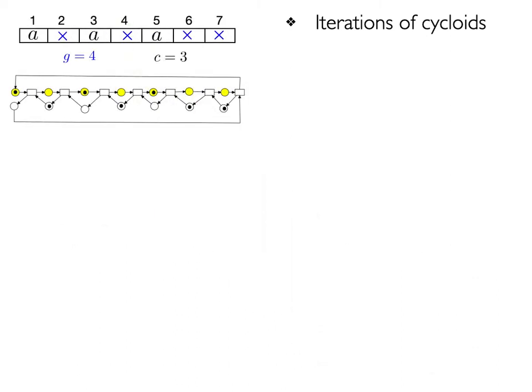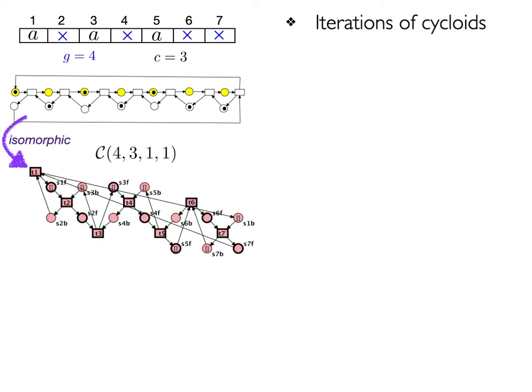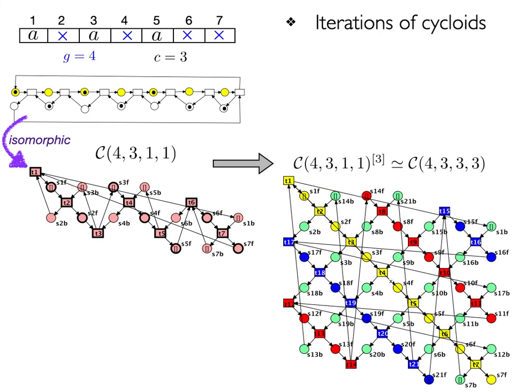Consider the simple traffic queue with 3 anonymous cars and 4 gaps, which is isomorphic to the simple Petri net and the cycloid 4-3-1-1. Then, the three-fold iteration is isomorphic to 4-3-3-3.